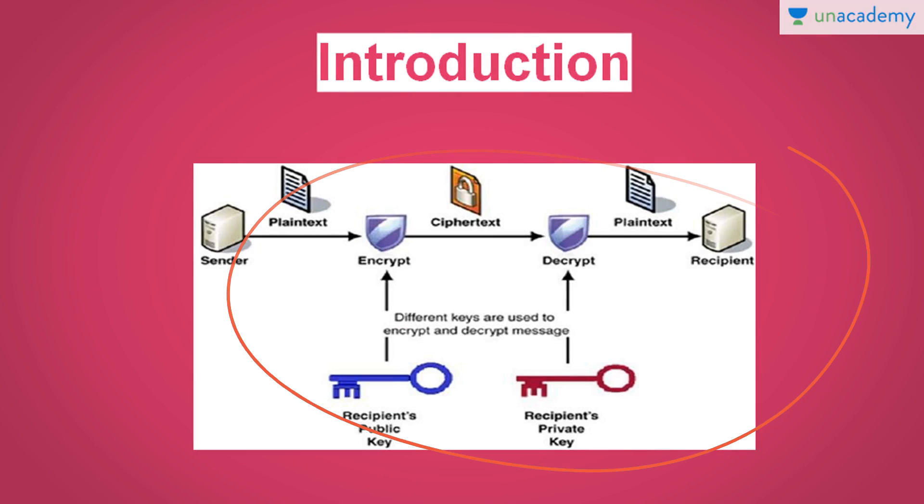So this is your typical public key crypto system. We have a sender who is sending the message to the receiver. Now, in order to ensure the security of the message, the sender is going to encrypt the message to make the ciphertext. For this encryption, it uses the recipient's public key. Now, public key, as the name suggests, is available publicly for anyone to access. When the message reaches the receiver, he uses his private key to decrypt the message and get the plaintext back from the ciphertext. So here, if you notice, two different keys are being used.